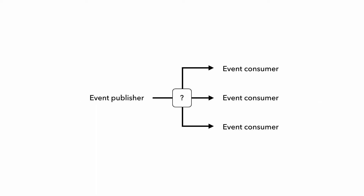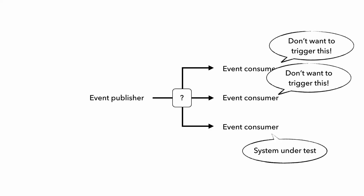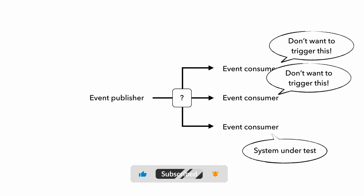And since an event might be consumed by many event consumers but we're only interested in testing one of them, the next challenge is how do we stop other event consumers from getting triggered when we run our tests? This can often cause noise in shared environments. Imagine publishing a malformed or invalid event to test how your consumer handles bad data, but that triggers other consumers and causes them to error, which then triggers alerts and wastes people's time investigating. So how can we isolate the system under test to avoid unwanted side effects?